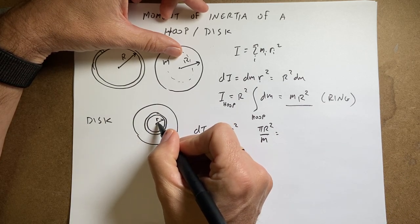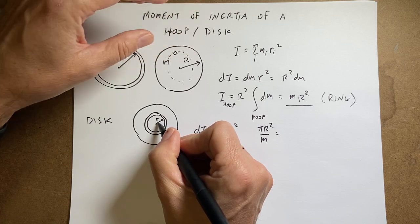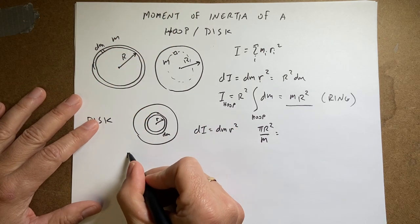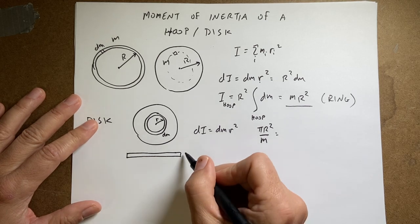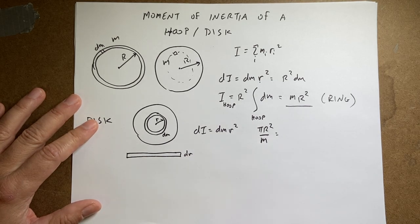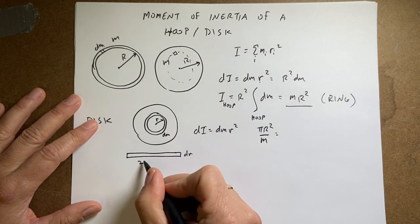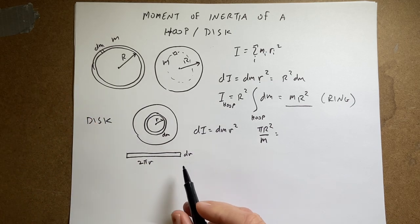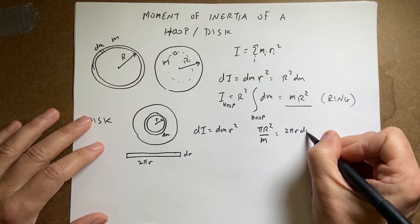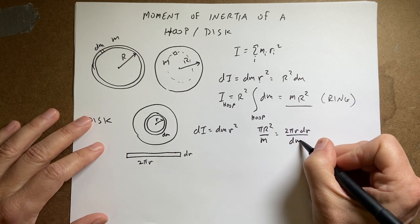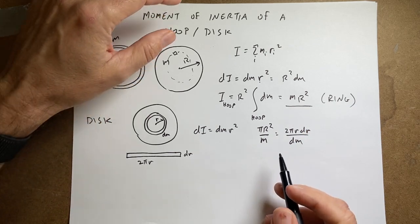So if this ring has a, I can take this ring and cut it open and split it out like that. It's a rectangle now. It has a width of dr and it has a length of 2π r. So the area of this is going to be 2π r dr and the mass is going to be dm. So that has to be true if the density is constant.